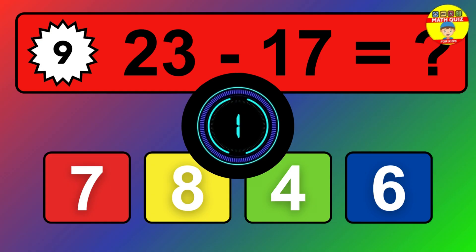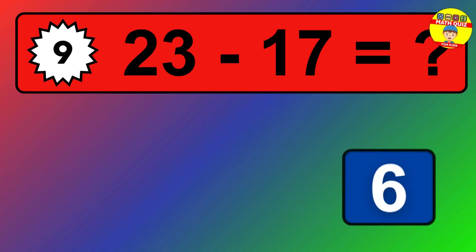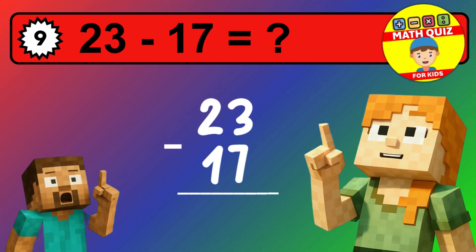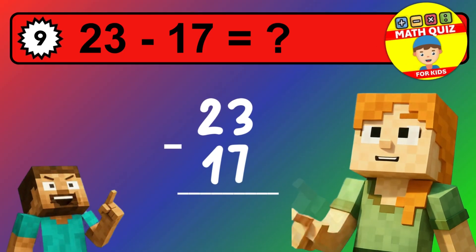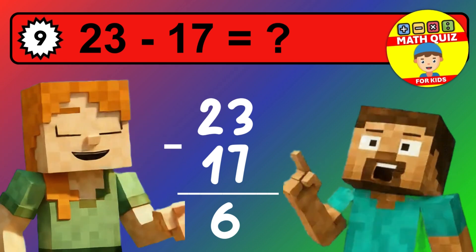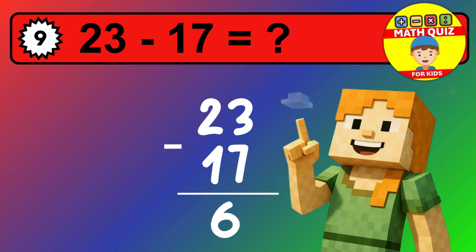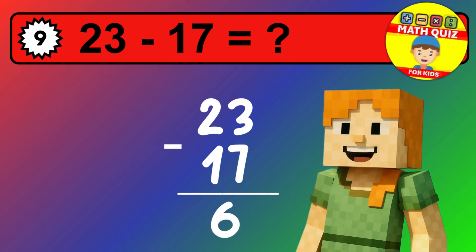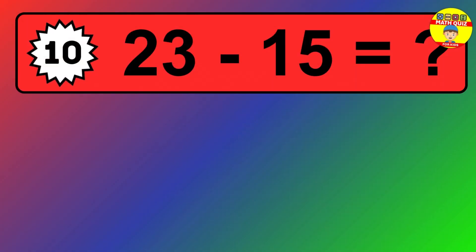We start with the units. 1 minus 9 is not possible, so we need to regroup. We take one 10 from the tens column. Now we have one tens, and the units become 11. Now we subtract. 11 minus 9 is 2. Then we go to the tens. 1 minus 1 is 0. The final answer is 2.